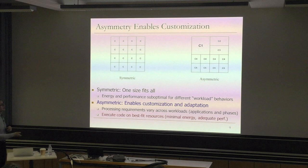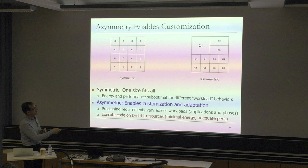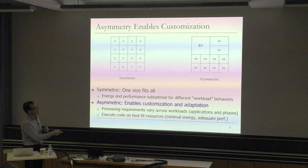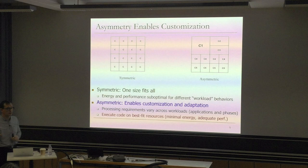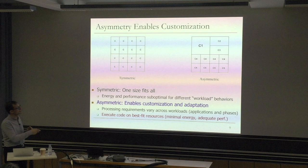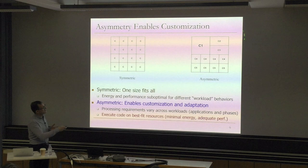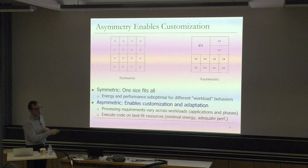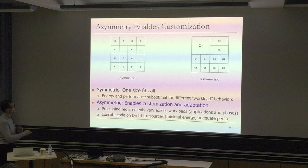Assuming you have heterogeneity, now it's asymmetric and you enable customization and adaptation. Processing requirements vary across workloads - when you have a high processing requirement, you map it to a large core; when the application doesn't need as much, you map it to a smaller core. Then you can execute code on best-fit resources and get closer to minimum energy while satisfying adequate performance, or maximize performance this way. You can maximize overall system performance when executing many workloads simultaneously - this becomes a mapping problem similar to what we discussed earlier. Symmetric mapping is easier; asymmetric mapping is clearly harder.